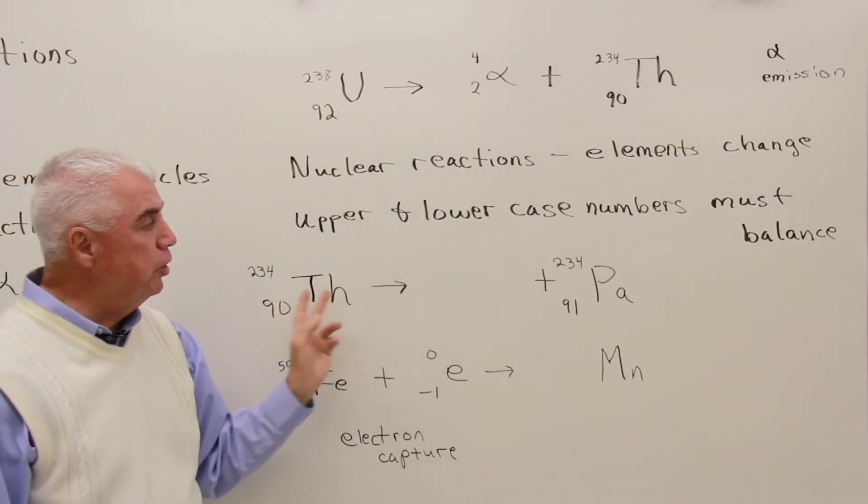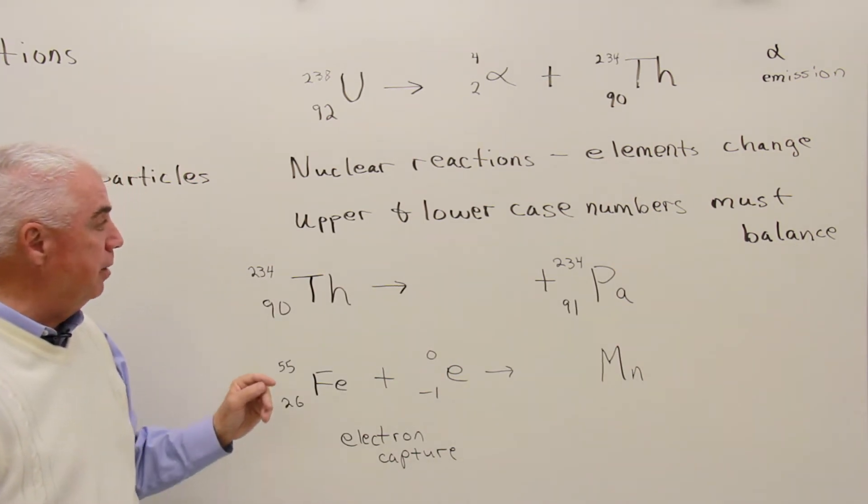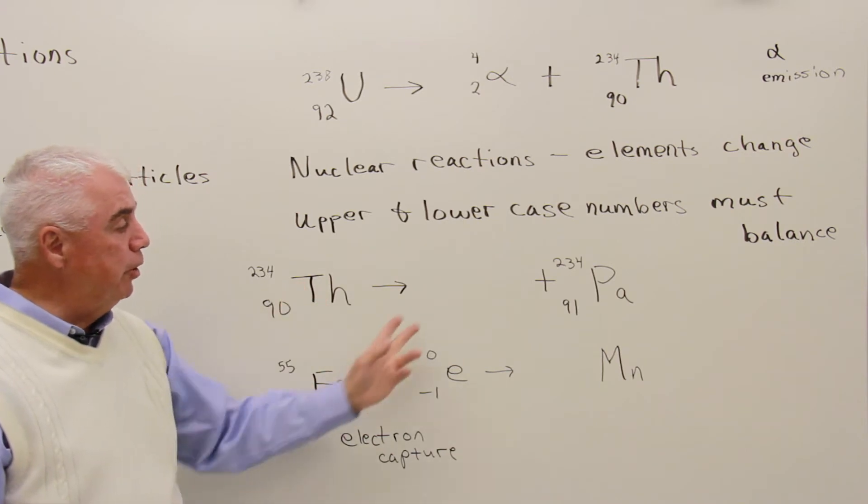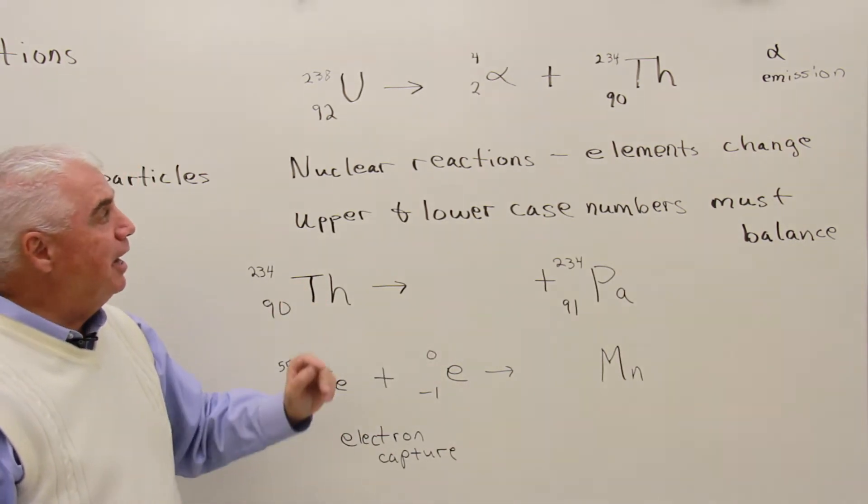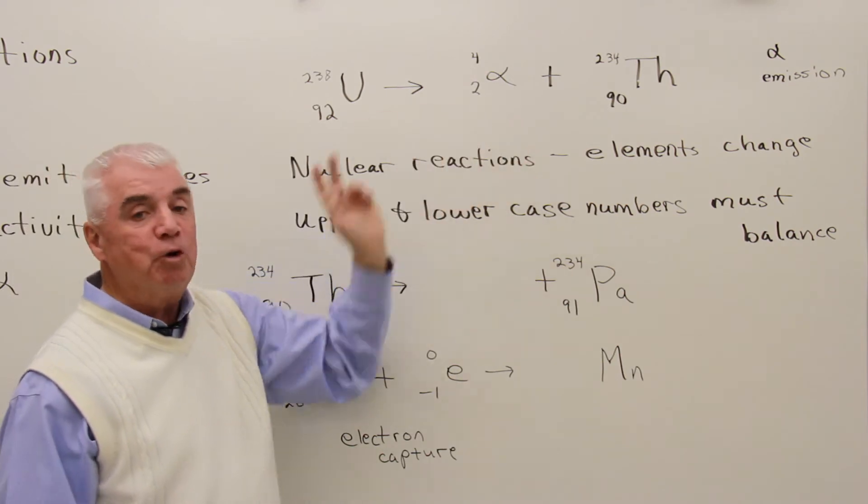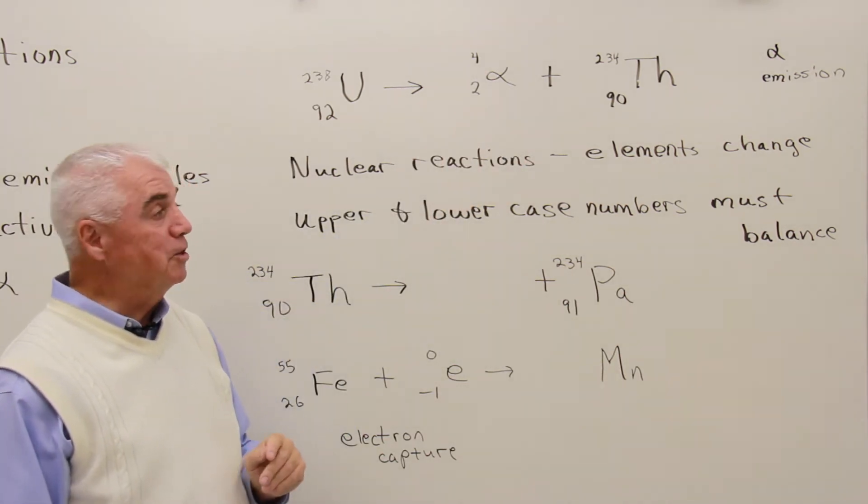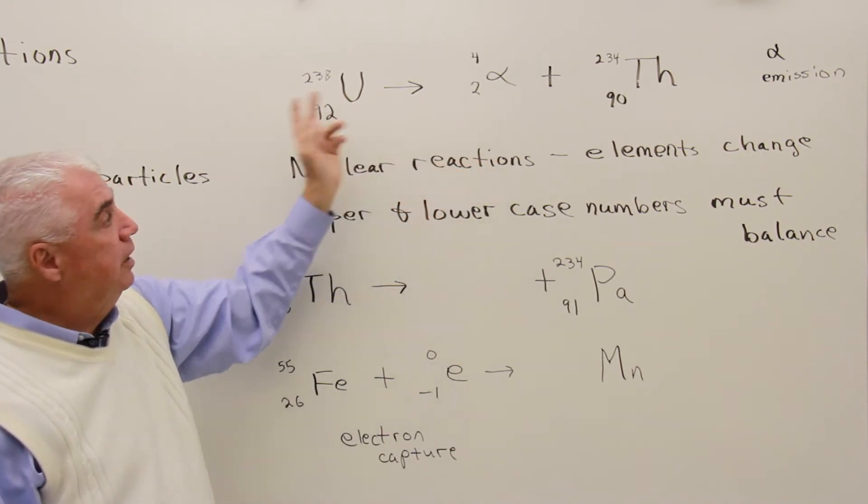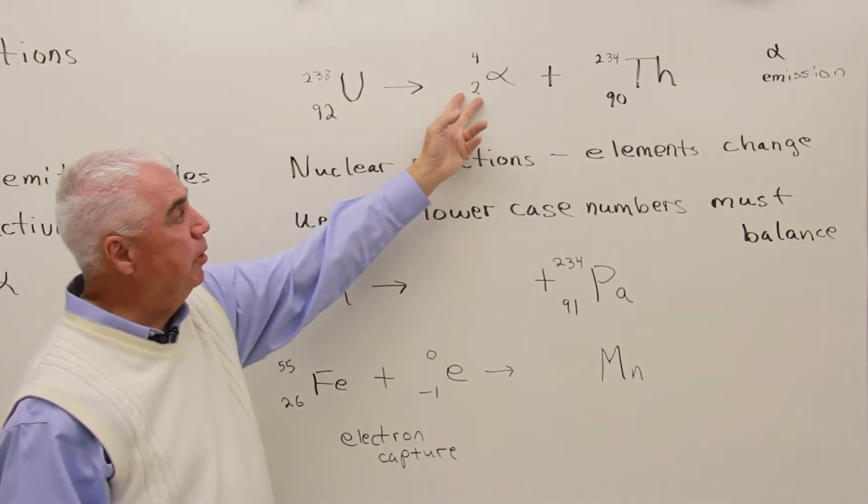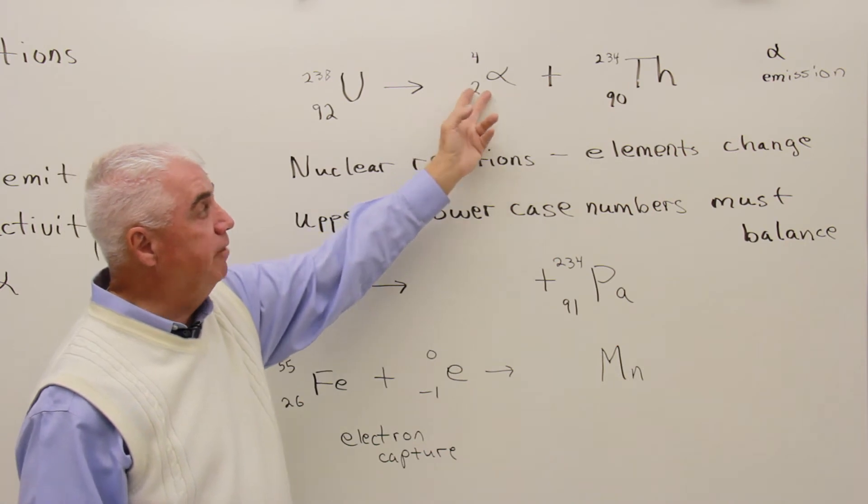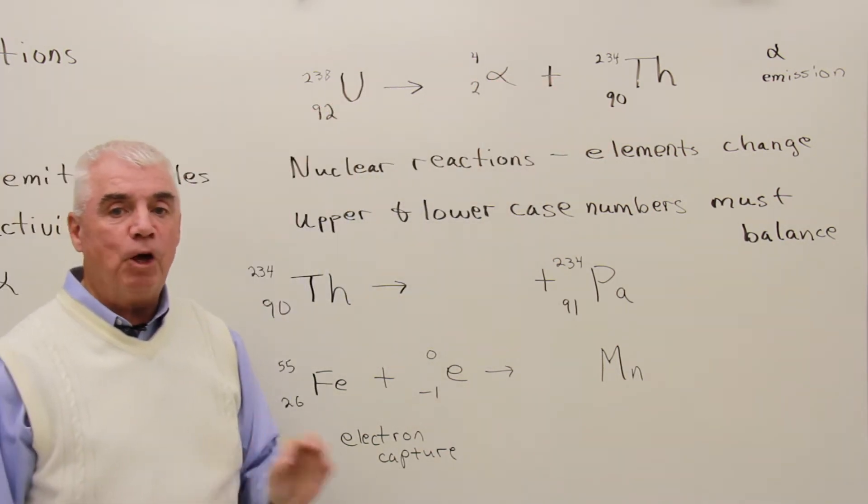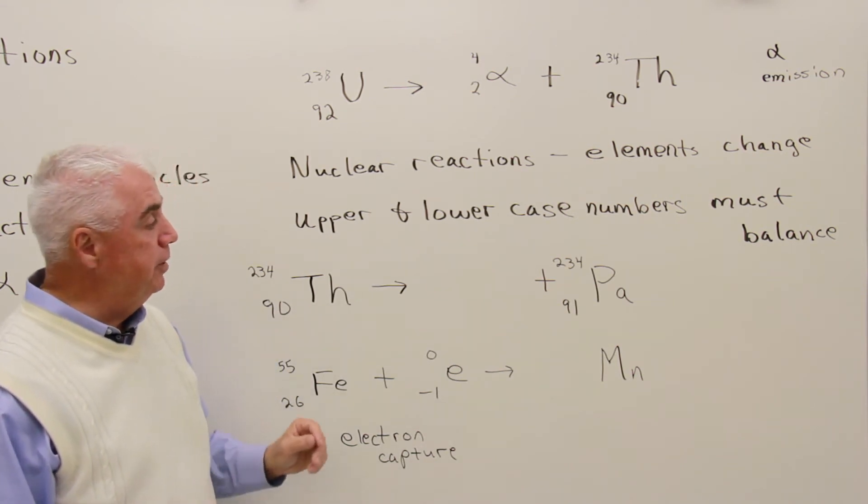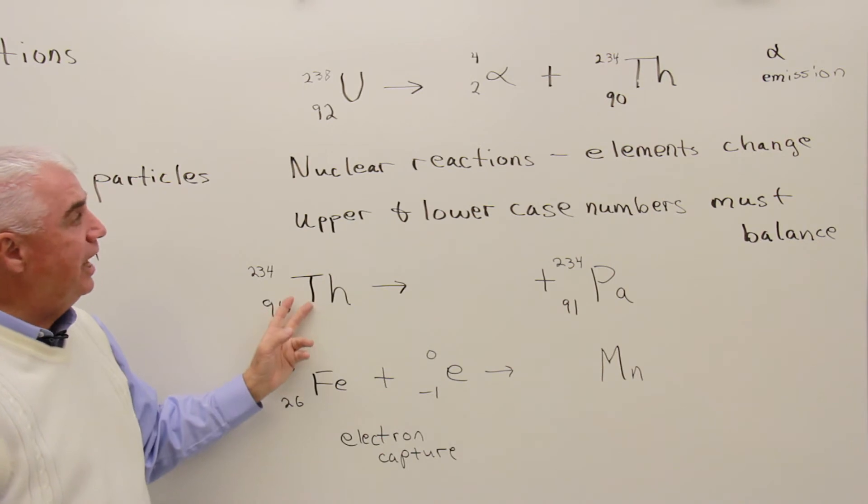Here's another nuclear equation, and I've left out something this time. A particle is being emitted. Let's see if we can figure out what the missing particle is. And I might add that anytime you're given a nuclear equation, one of the skills that we'd like you to have is to be able to balance that equation. If we give you all the other pieces of information, we'd like you to be able to fill in the missing information.